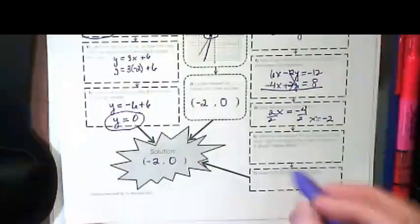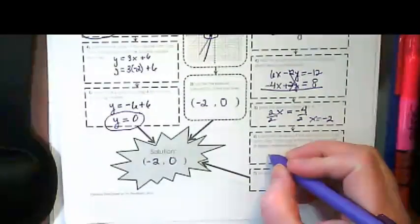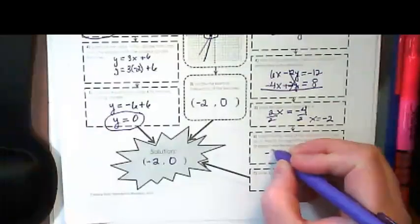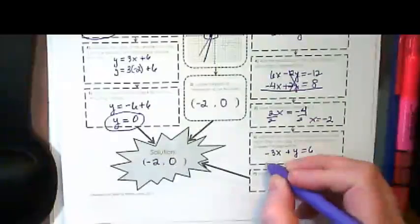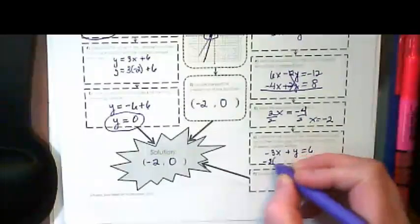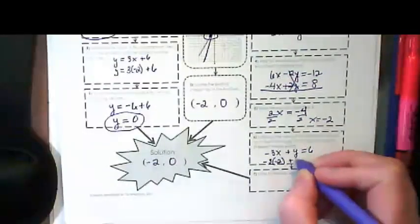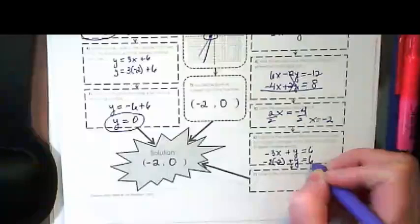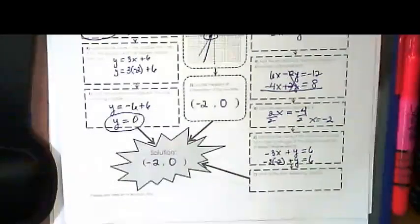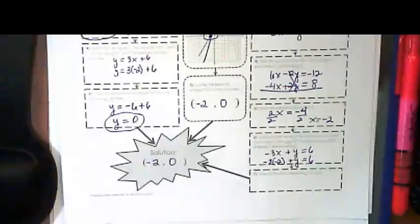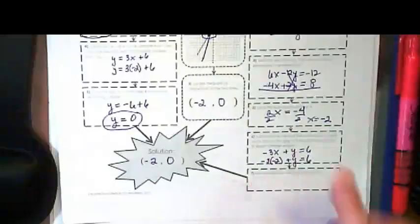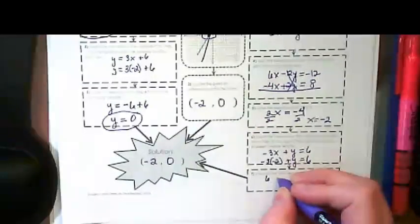Then we're going to substitute that in. Again, I always try to choose the easiest equation to sub it back in for. And then finally we are going to solve for the other variable.